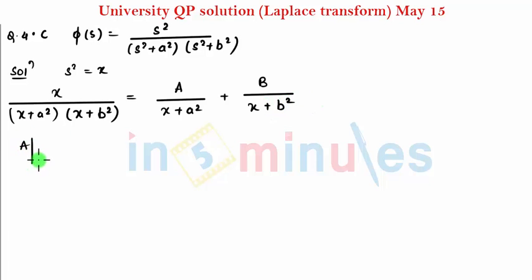For finding A, I need to substitute X equal to minus A squared. Substituting that gives me minus A squared divided by B squared minus A squared, which we can write as A squared divided by A squared minus B squared. So that's my A.